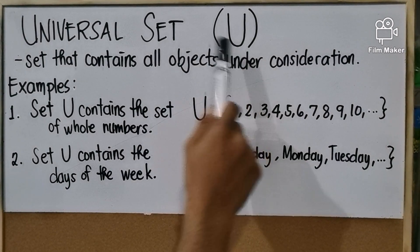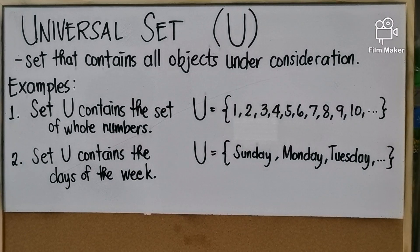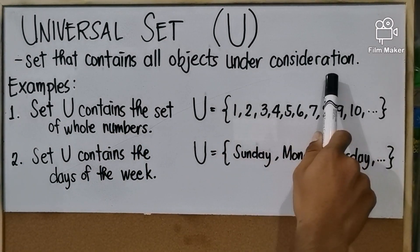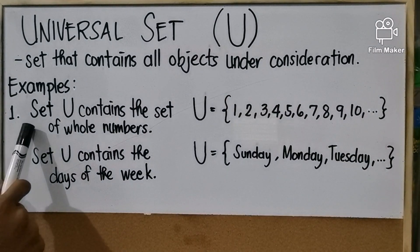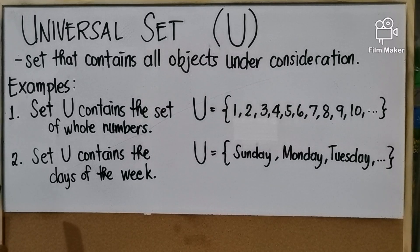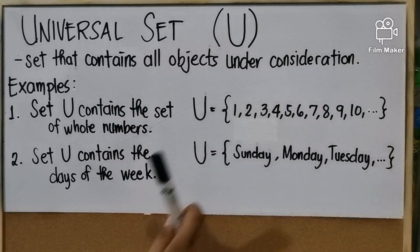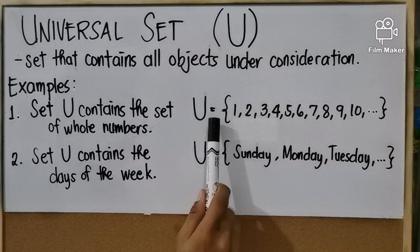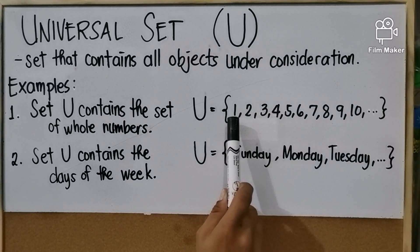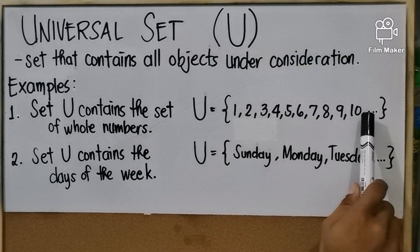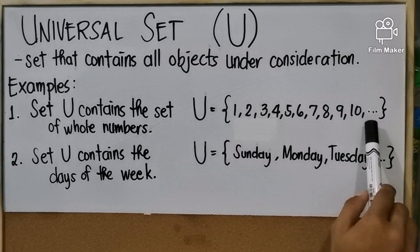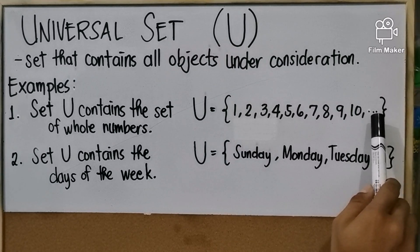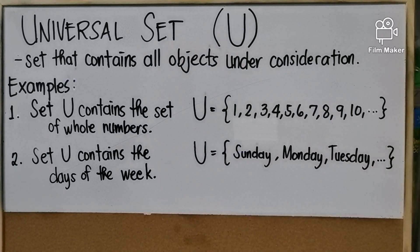Now we have universal set, which is denoted with capital letter U. A universal set is a set that contains all objects under consideration. For example, set U contains the set of whole numbers — 1, 2, 3, 4, 5, 6, 7, 8, 9, 10, and so on. We write it as: capital U equals open brace, write the whole numbers, and since it is infinite, after the comma you put an ellipsis, then close the brace.